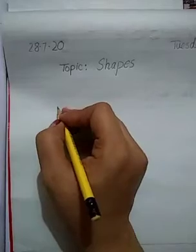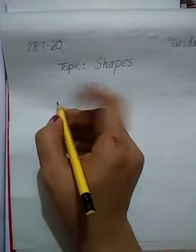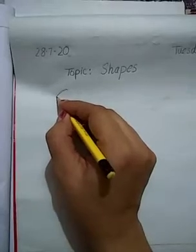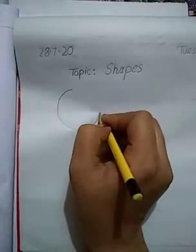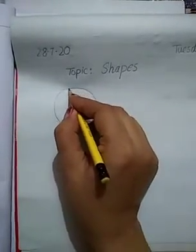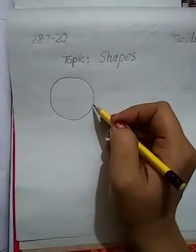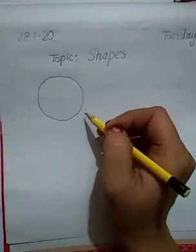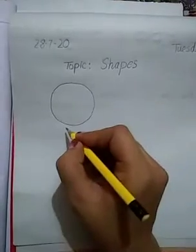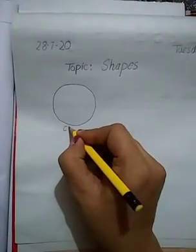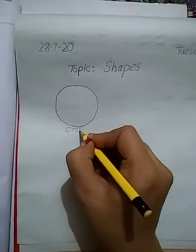This is today's topic: shapes. Look carefully and tell me which shape I am going to draw. Yes, you probably guessed it. It's round and round, it has no corner. So guess what is this? This is circle. C-I-R-C-L-E. It has no corner, it's round and round.